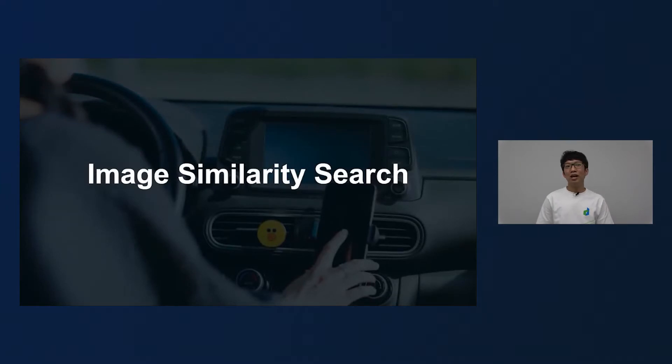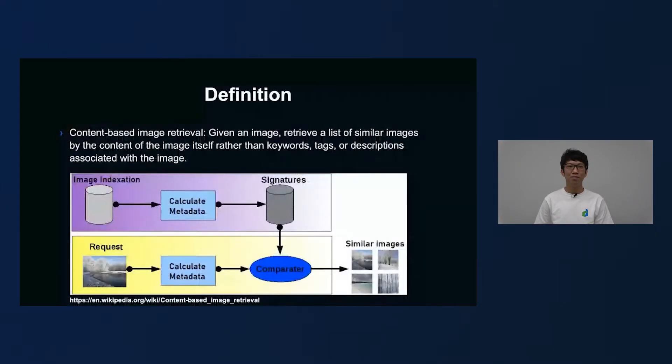First, image similarity search problem. In this project image search means content based image retrieval. So given the image, we want to retrieve the list of similar images by the content of the image itself rather than the keywords or tags or descriptions associated with the image. We just use the image itself. The general setting for content based image retrieval is shown in the figure. First, images are represented as signatures and indexed to the database. Once the request comes, we obtain the signature from the request image and then similar images will be retrieved using a comparison.